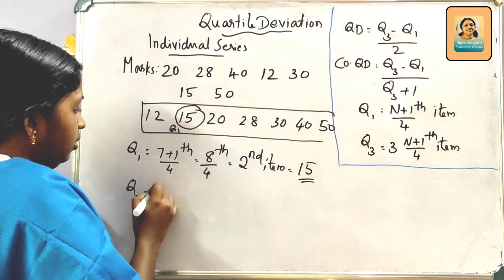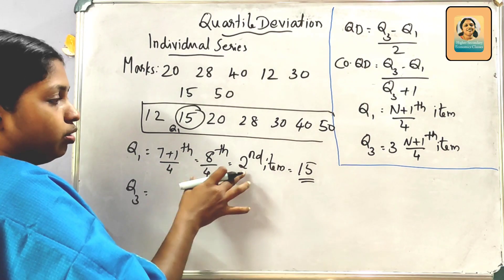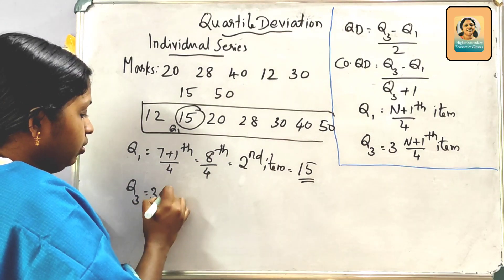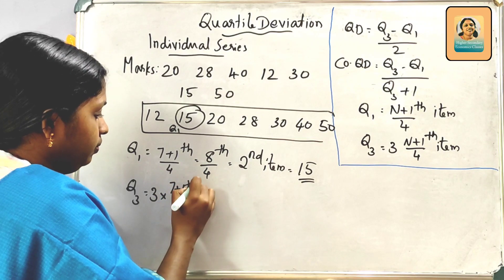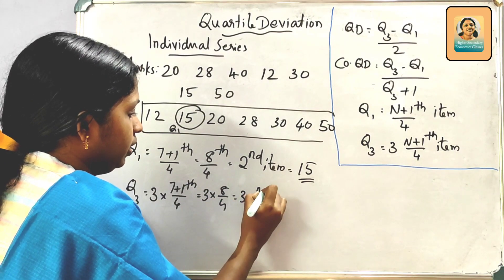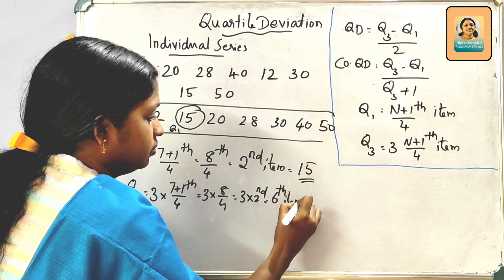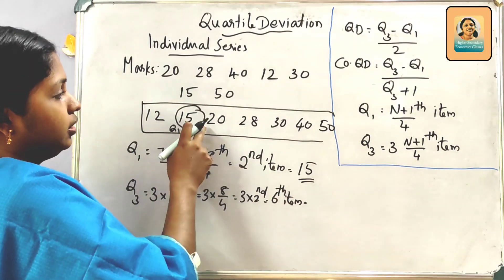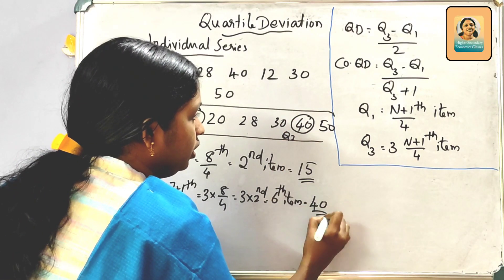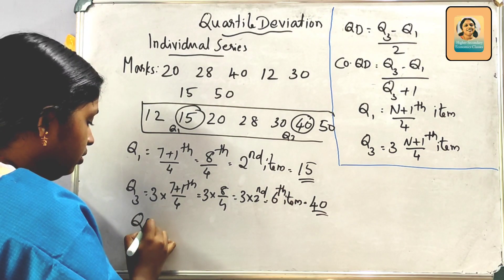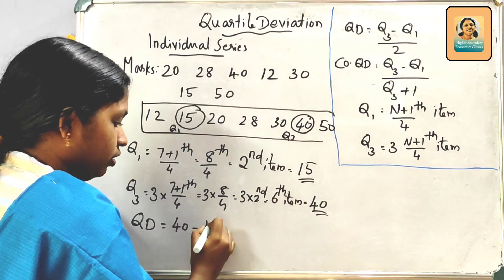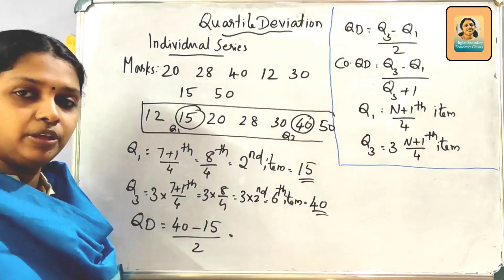Then Q3. Q3 = 3(n+1)/4 th item = 3 into (7+1)/4 = 3 into 8/4 = 3 into 2nd item = 6th item. So Q3 equals 40. Quartile Deviation QD = (Q3 minus Q1) divided by 2 = (40 minus 15) divided by 2.